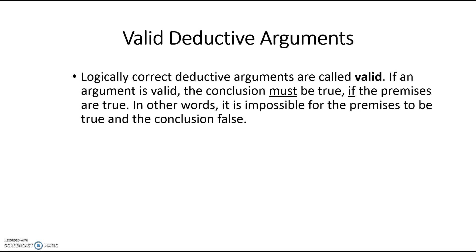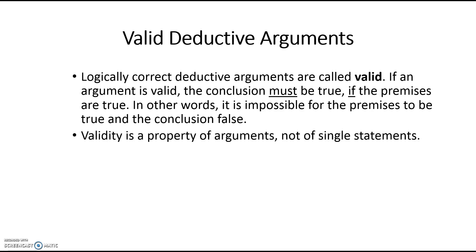Logically correct deductive arguments are called valid. Deductive arguments are not the only kind of arguments — we're going to talk about inductive arguments later on. But for now, the next couple of lessons, we're only talking about deductive arguments. When a deductive argument is logically correct, it's valid. Here's the definition of validity, and you must know this: if an argument is valid, then the conclusion must be true if the premises are true. It is impossible for the premises to be true and the conclusion to be false if you've got a valid argument. Validity is a property of arguments, not of single statements.